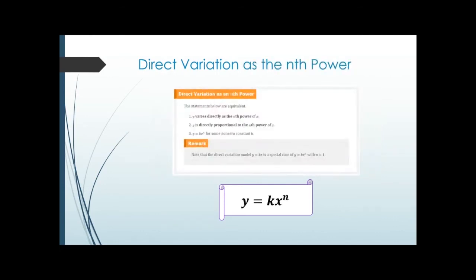If you have direct variation as some power, there's an exponent on x — it could be the square of x. The setup is essentially the same: 'y varies directly as the nth power of x,' 'y is directly proportional to the nth power of x,' or 'y equals k times x to the n.' You always have k in front, and then an exponent on x depending on the wording.